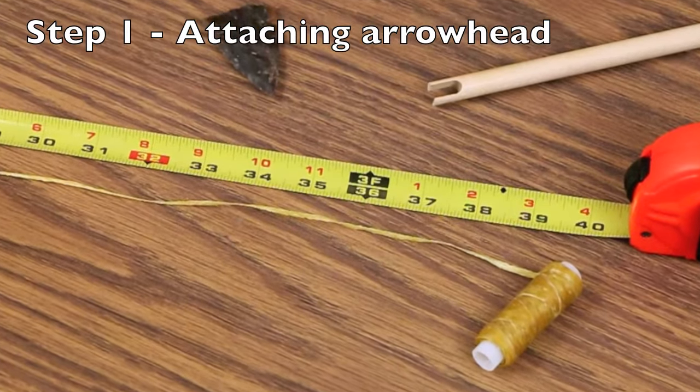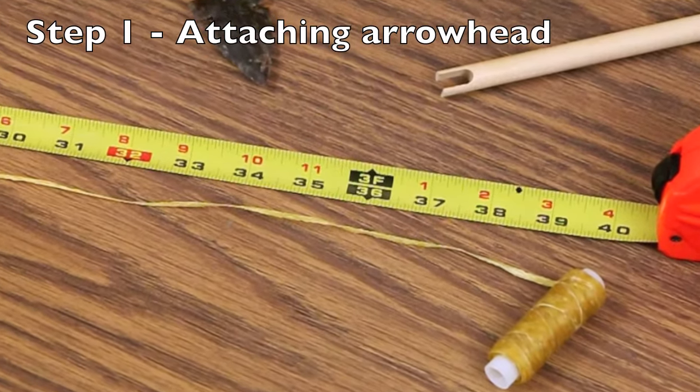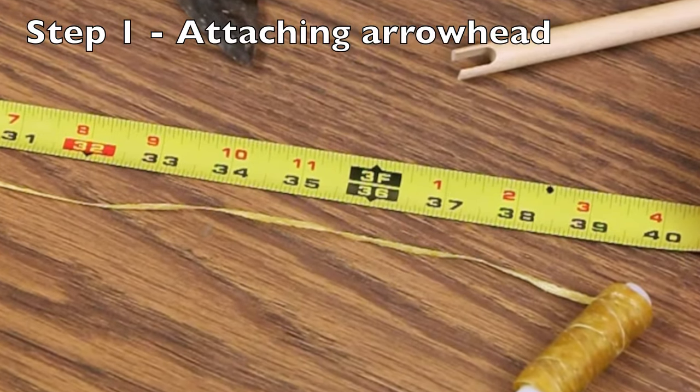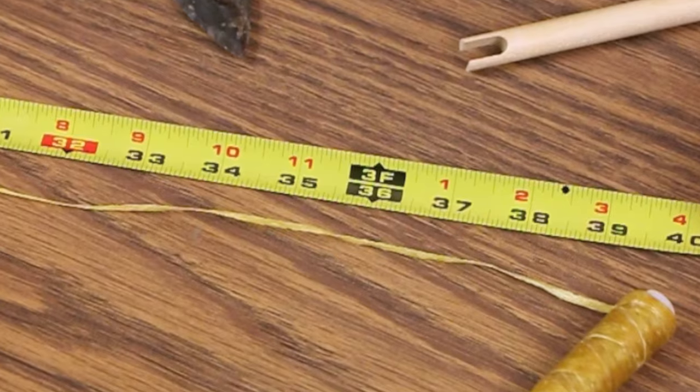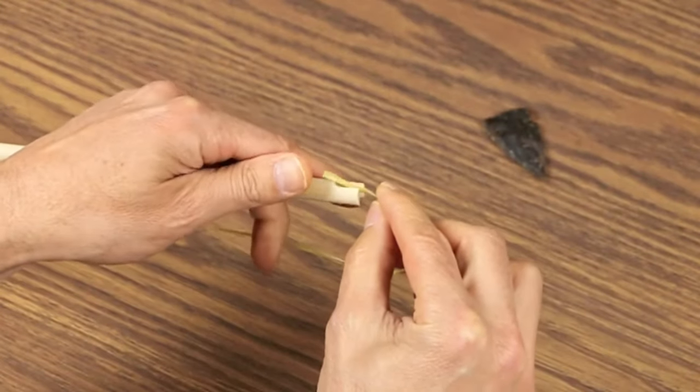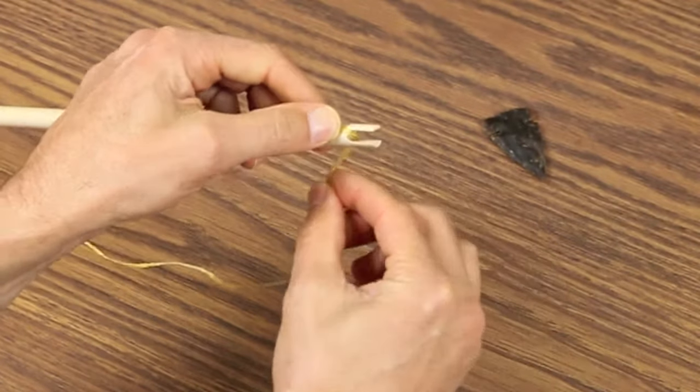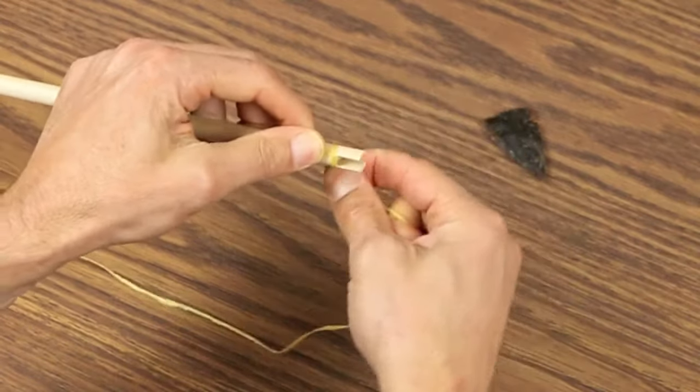The first step in creating the arrow is to attach the arrowhead. You'll do this by using a 36-inch piece of sinew, the yellow string. Lay a beginning piece of the sinew through the notch and hold it with your thumb. Wrap around two times to secure that end.